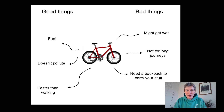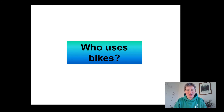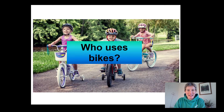So what we're going to have a quick think about now is why people choose to use a bike and who uses bikes. Have a little think about who you think would use a bike — you can pause the video if you need to chat with the person next to you. The first group of people I think about using bikes is children. We always think about children being out on their bikes, playing around and having a bit of fun.